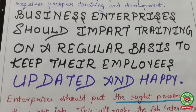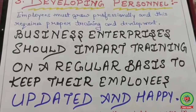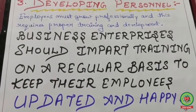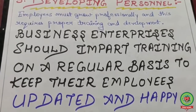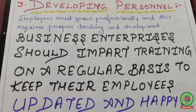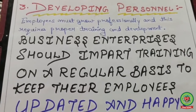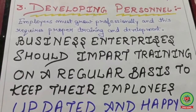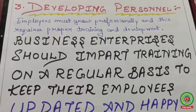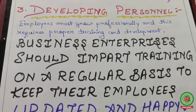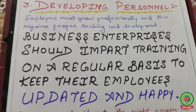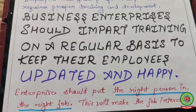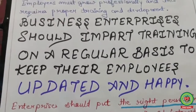For example, previously registers were maintained manually for accounting, but nowadays computerized accounting software is available. It is the responsibility of the business to provide training on how to operate and work on the computer — that is called training, providing the skill to work in the business. Enterprises should put the right person in the right job, which makes the job interesting and reduces monotony.